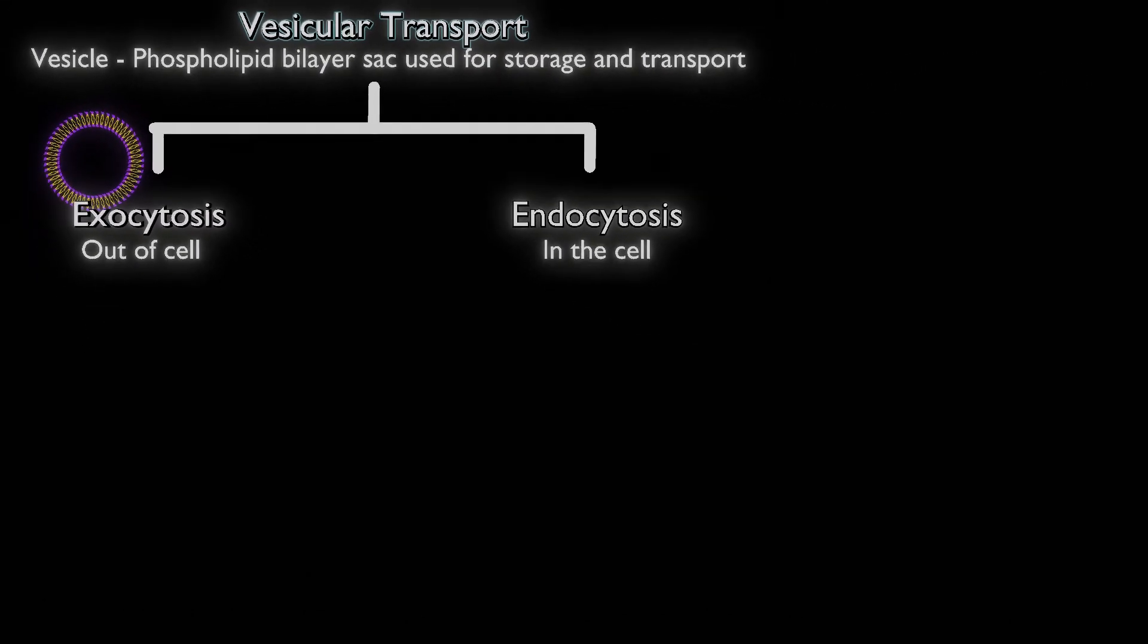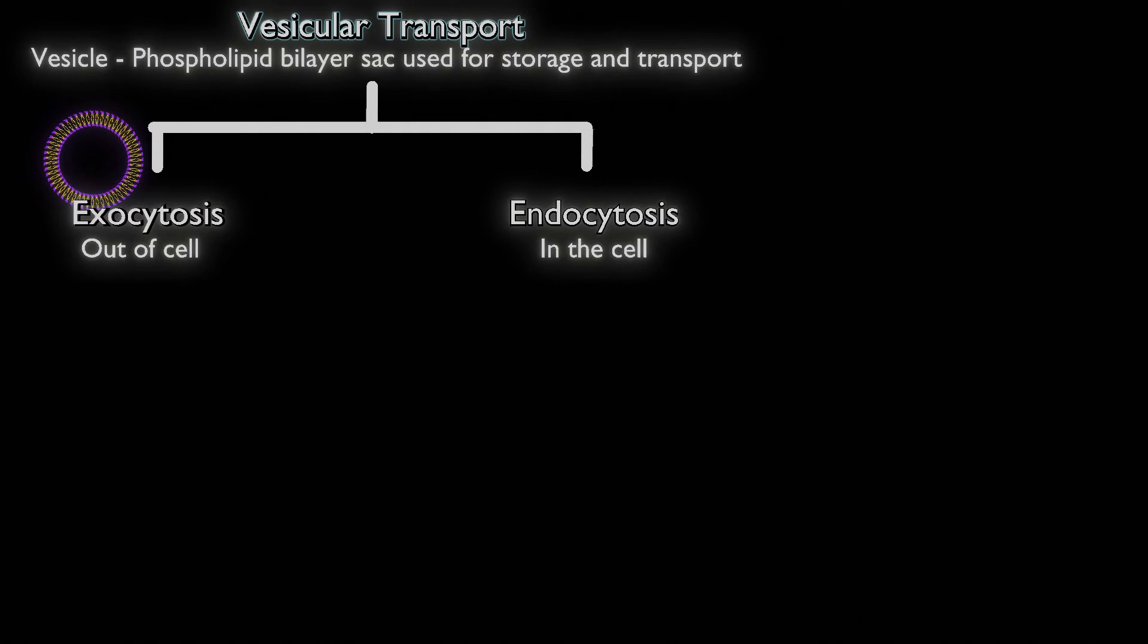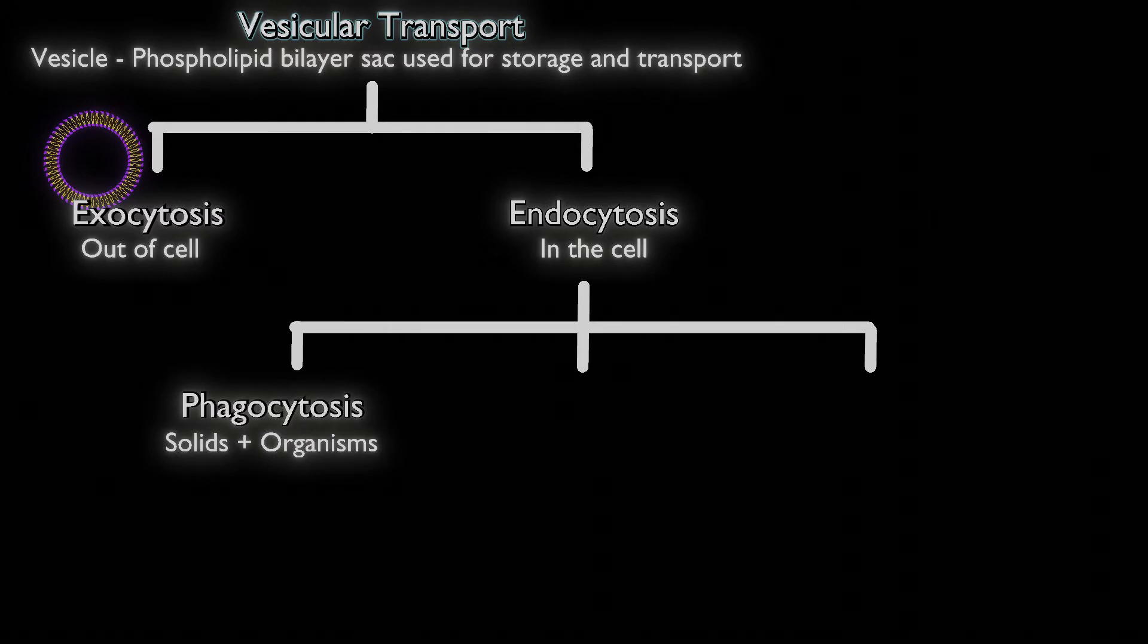Let's look at a couple types of endocytosis. The first one is phagocytosis, which is moving solids and organisms through the membrane using a vesicle. Let's go into our bloodstream. We have a bacteria here that we're focused on, and a white blood cell comes out of nowhere and is ready to eat this guy. Let's simplify this white blood cell so we can see the actual plasma membrane itself.